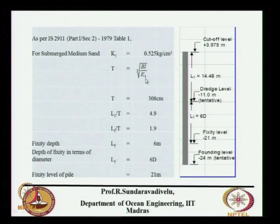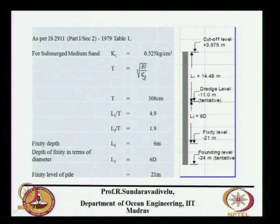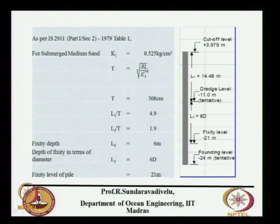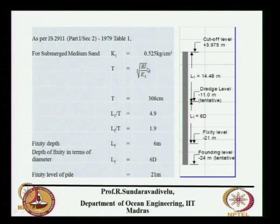Young's modulus of the pile is 5000 times the square root of fck, and moment of inertia is π·d⁴/64. Substitute values in kg/cm² for Young's modulus, cm⁴ for moment of inertia, and k1 = 0.525 kg/cm³ for submerged medium sand. Take the fifth root to get T in centimeters.